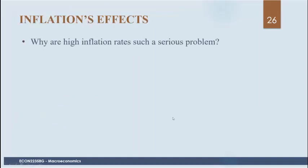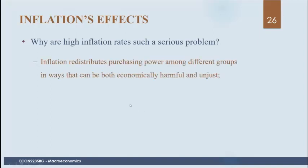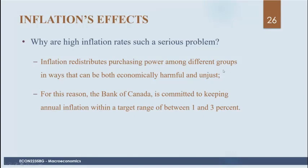You could think of unemployment and inflation as two economic evils. Inflation is bad for a number of reasons. One particular issue is that it redistributes purchasing power among different groups in harmful or unjust ways. For example, with lenders and borrowers: if you got a fixed interest rate loan at 2% for five years, and then unexpectedly high inflation occurred — say 100% — you would pay back the lender basically nothing, because your income would grow much more than the loan value.